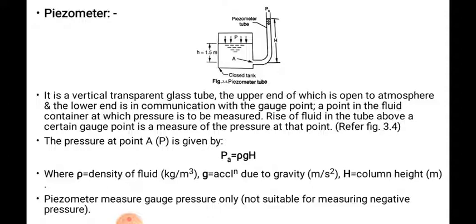The piezometer is a vertical transparent glass tube whose upper end is open to the atmosphere and lower end communicates with the gauge point — the point in the fluid container at which pressure is to be measured. The rise of fluid in the tube above the gauge point is the measure of the pressure at that point. The pressure at point A is given by pₐ = ρgh, where ρ is the density of the fluid, g is acceleration due to gravity, and h is the column height. The piezometer measures gauge pressure only and is not suitable for measuring negative pressure.